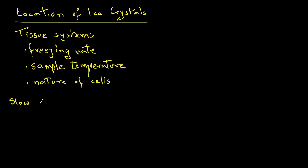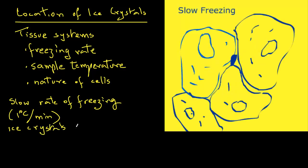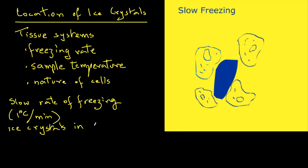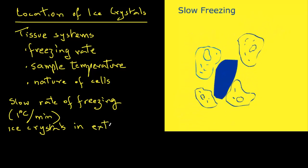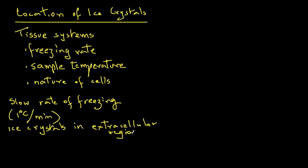When freezing rates are low, for example 1 degree C per minute, then ice crystals appear only in the extracellular regions as shown in this animation. These ice crystals are large due to water movement from the inside of the cell to the extracellular region where the crystal then begins to grow. And that movement of water from inside the cell causes the shrinkage of those cells.